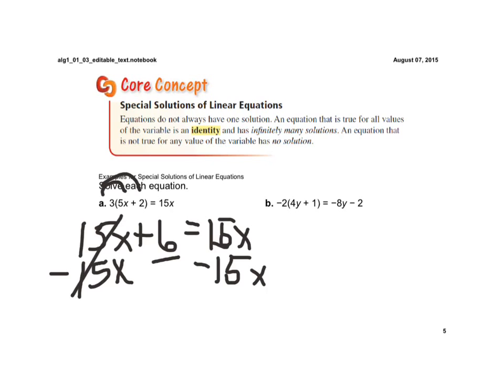When I do that, I'm left with 6 on the left side, but 15x minus 15x is 0. So my variable terms went away and this is one of those special cases. When you're solving an equation and the variable terms eliminate on both sides, and all you have is a number equal to a number.